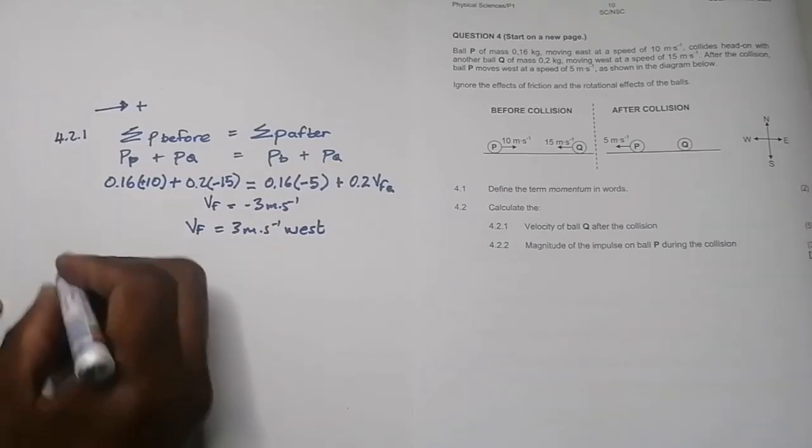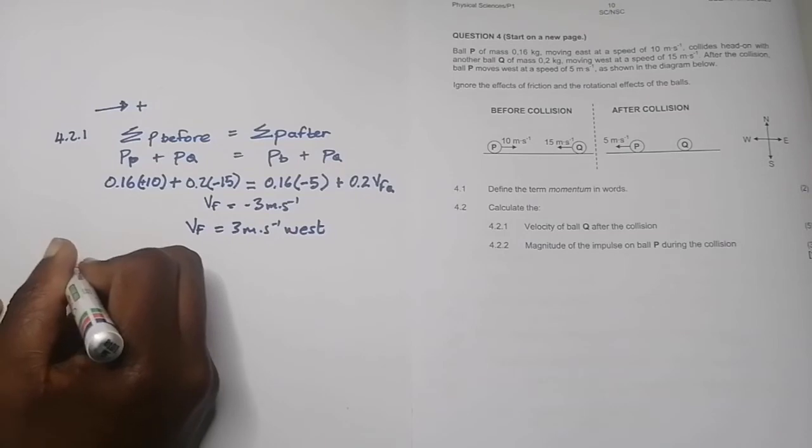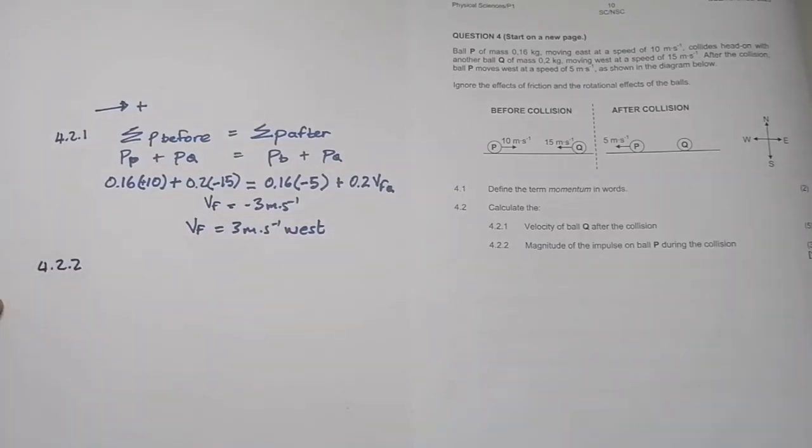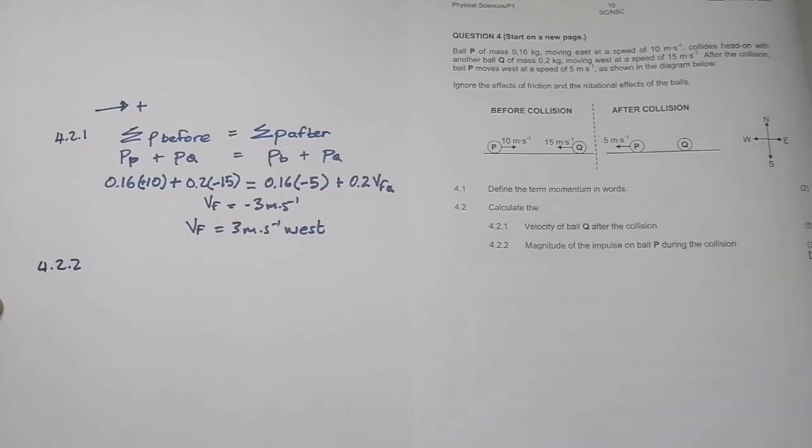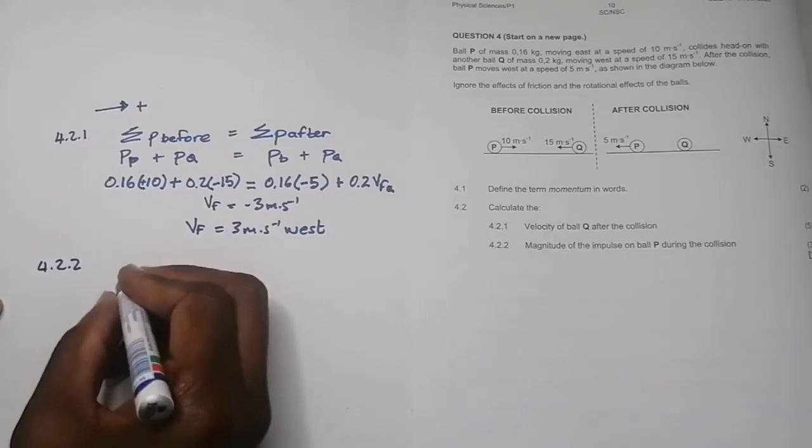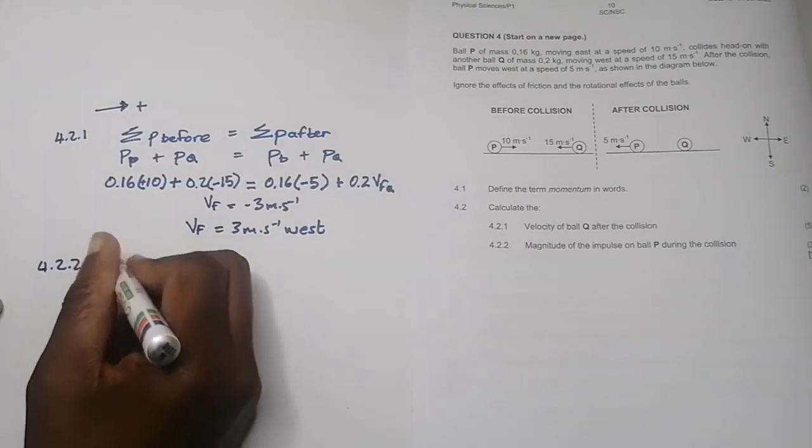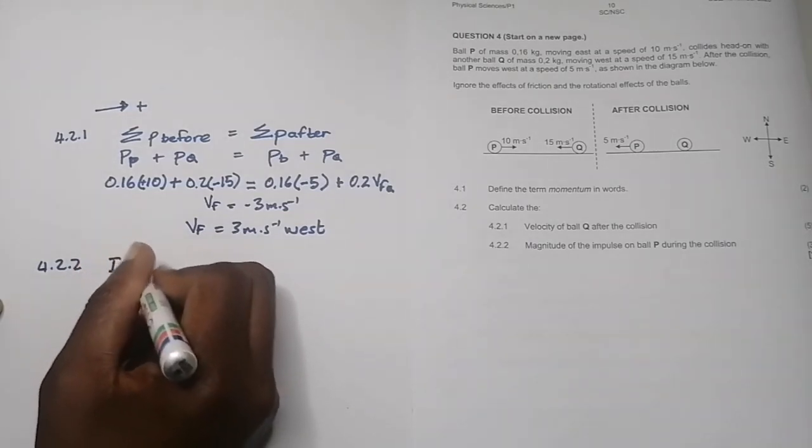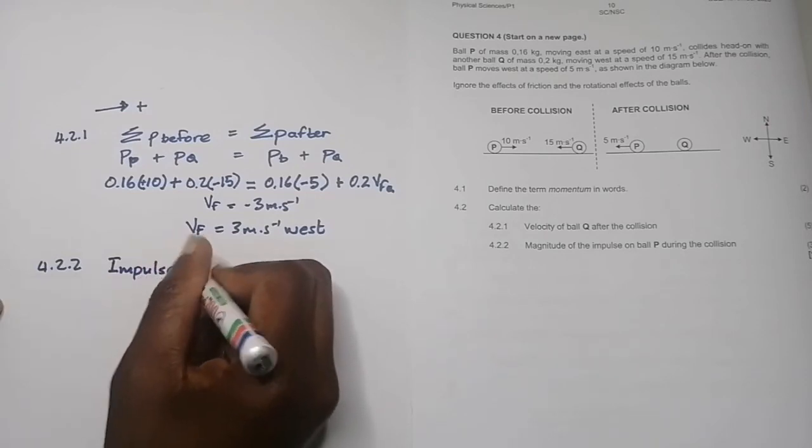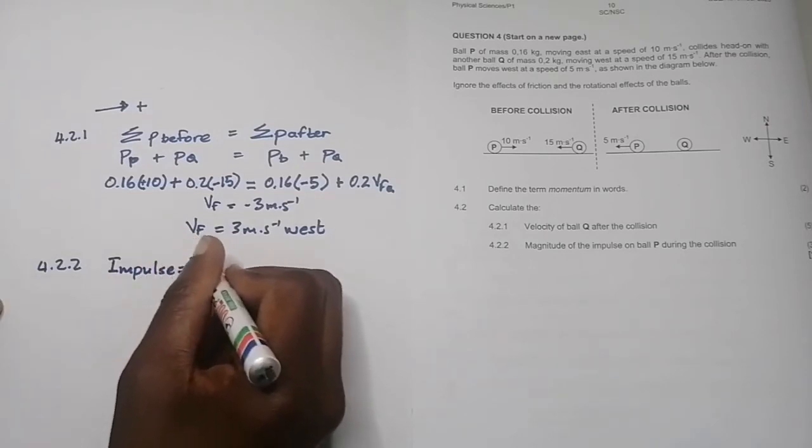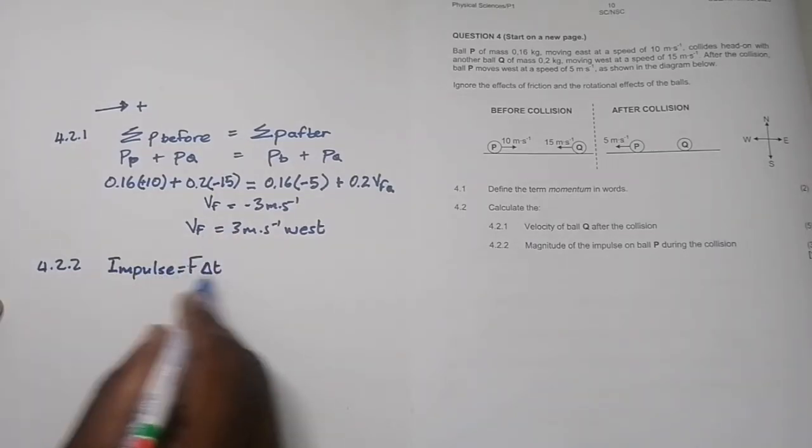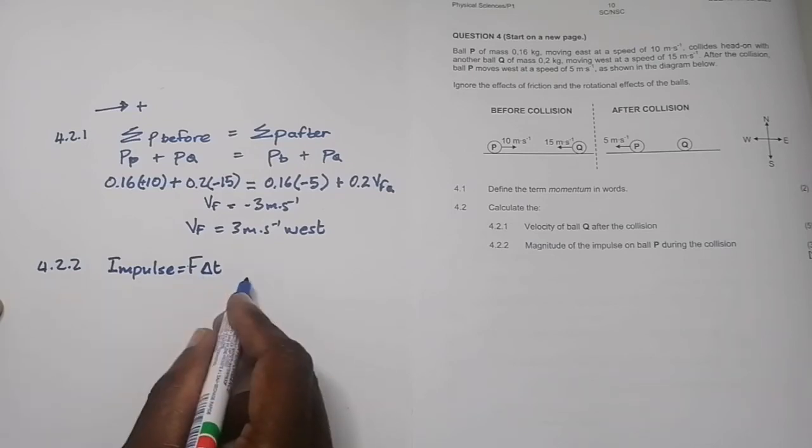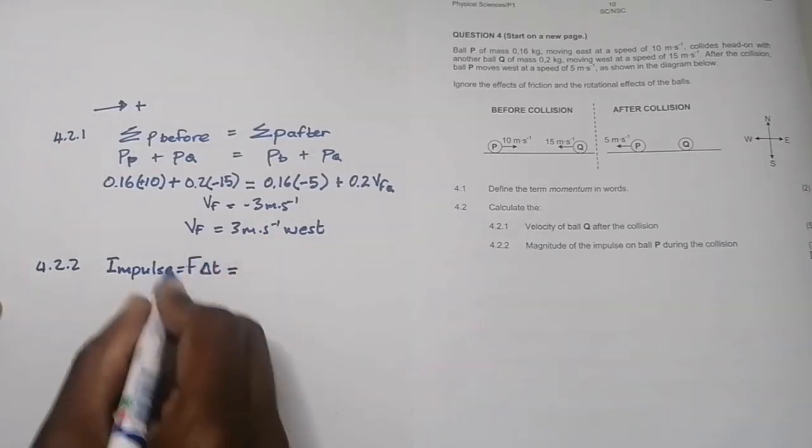The next question asks us to find the magnitude of the impulse on ball P during the collision. Let's look at impulse. By definition, impulse is simply the product of a force and the period over which that force acts on a body. But in this case, we don't have the force and the period. We know that Newton's second law F net delta t equals delta P, the impulse-momentum equation.